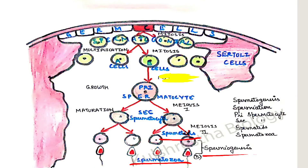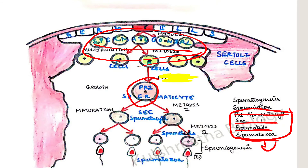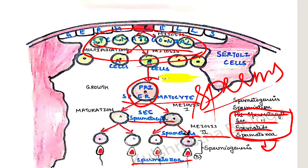Now about the names of the cells — primary spermatocyte, secondary spermatocyte, spermatids, spermatozoa, and also spermatogonial cells. You need to remember these cell names from spermatogonial to spermatozoa. Spermatogonial cells multiply to form many cells. A few of them grow in size and form primary spermatocytes. Primary spermatocytes undergo meiosis one to form secondary spermatocytes. These undergo meiosis two to form spermatids. Spermatids undergo differentiation to form spermatozoa, which are the sperms — spermatozoa is the scientific terminology.